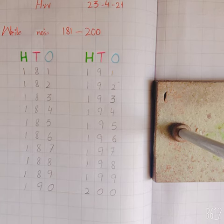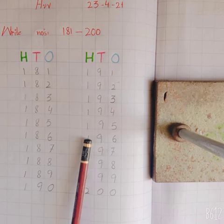How many tens in 196? Nine tens and six ones, and one hundred.